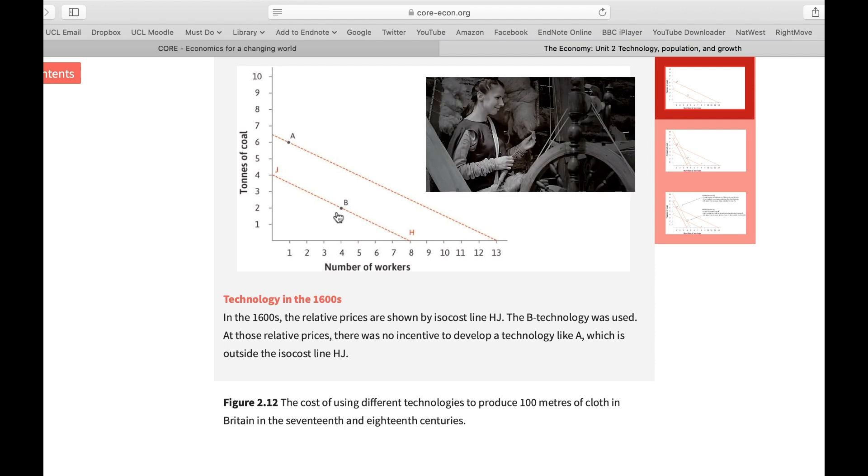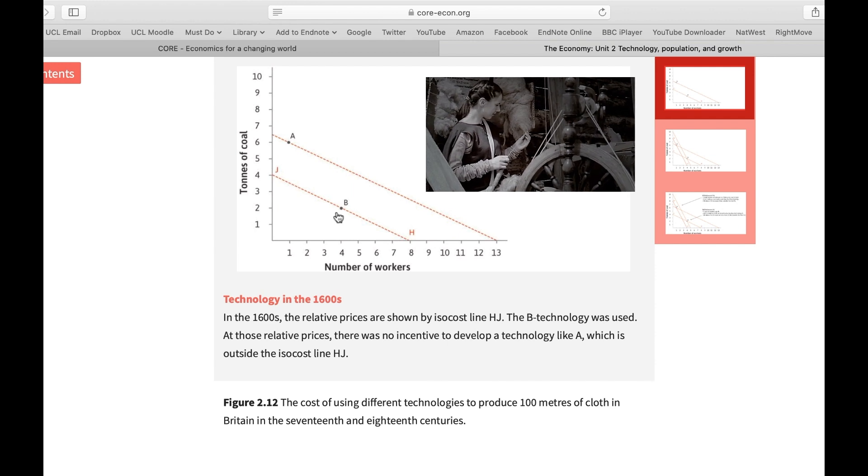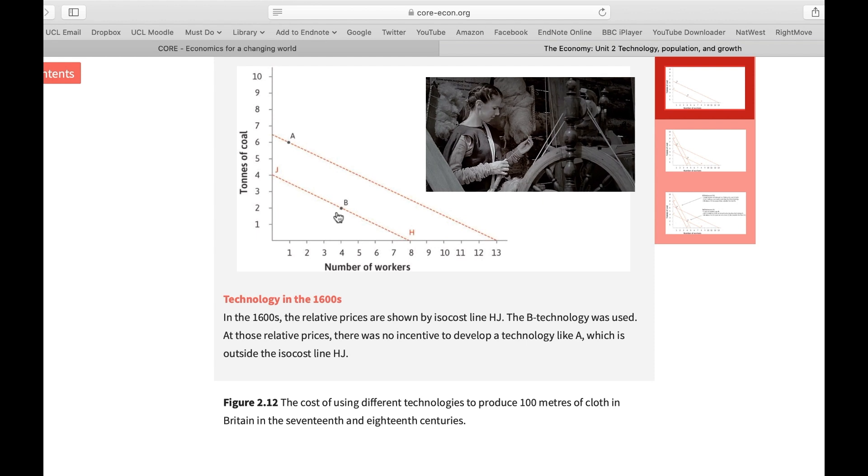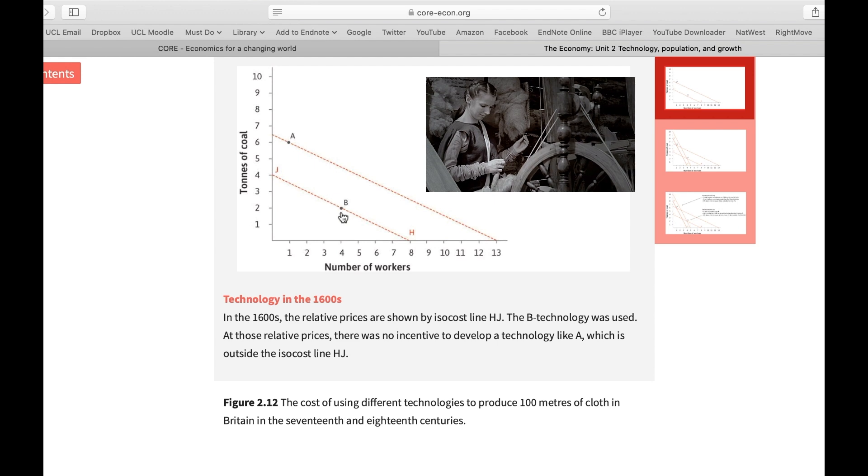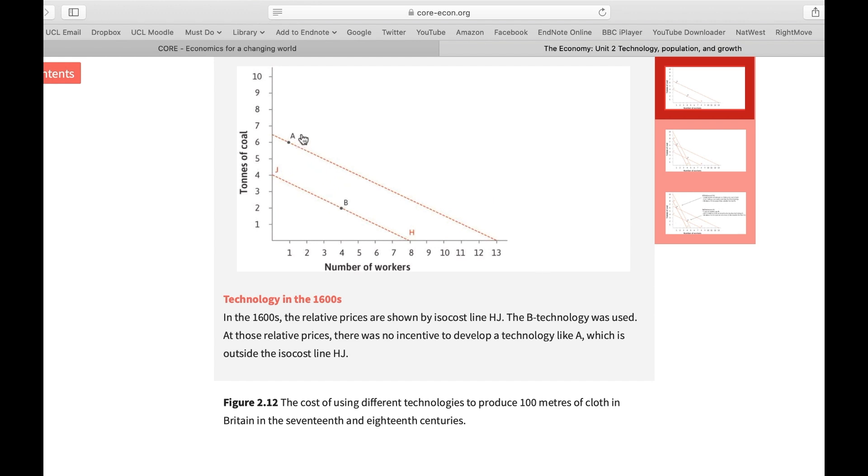This technology made sense because the price of labor was relatively low at that time. As you can see, it didn't make sense for Britain to move from Technology B to Technology A, which is a more energy-intensive technology. In other words, Britain didn't have any incentive to automate. Why? Because the price of labor was low.